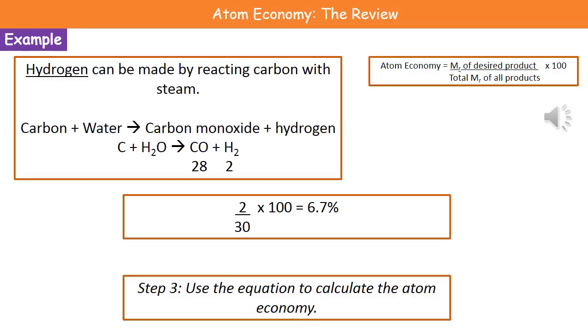The last thing we need to do is put those numbers into our equation for atom economy. Our mass of the desired product, hydrogen, is 2. We divide that by the total masses of all our products: carbon monoxide and hydrogen, so 28 + 2 = 30. Our final calculation is 2 ÷ 30 × 100 = 6.7%.